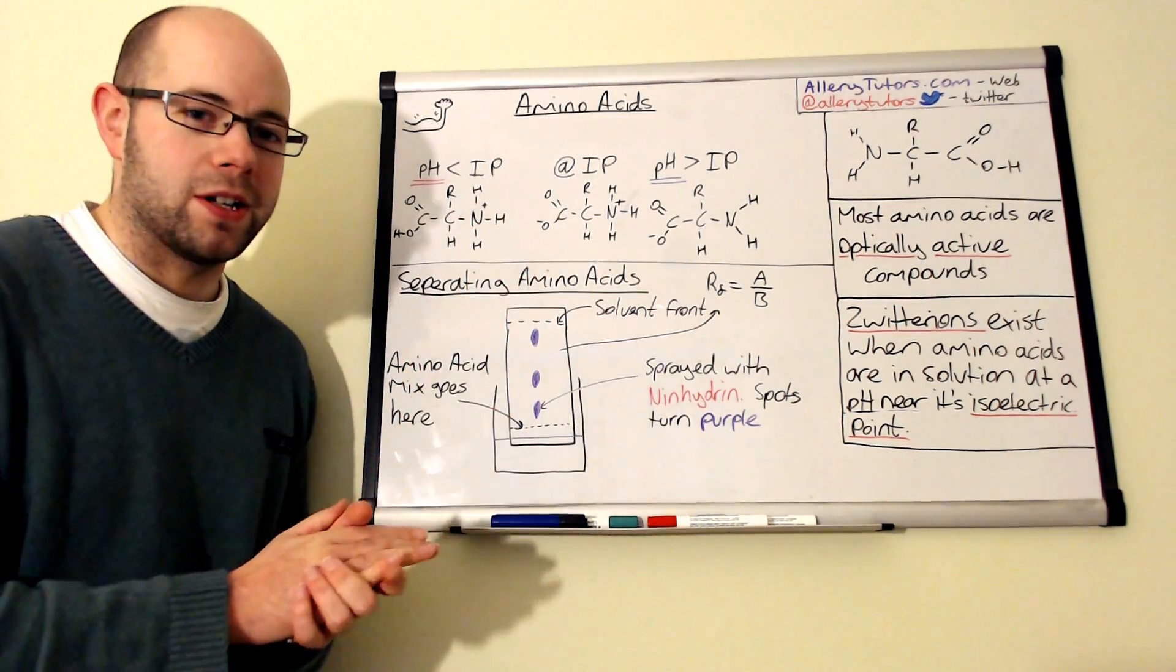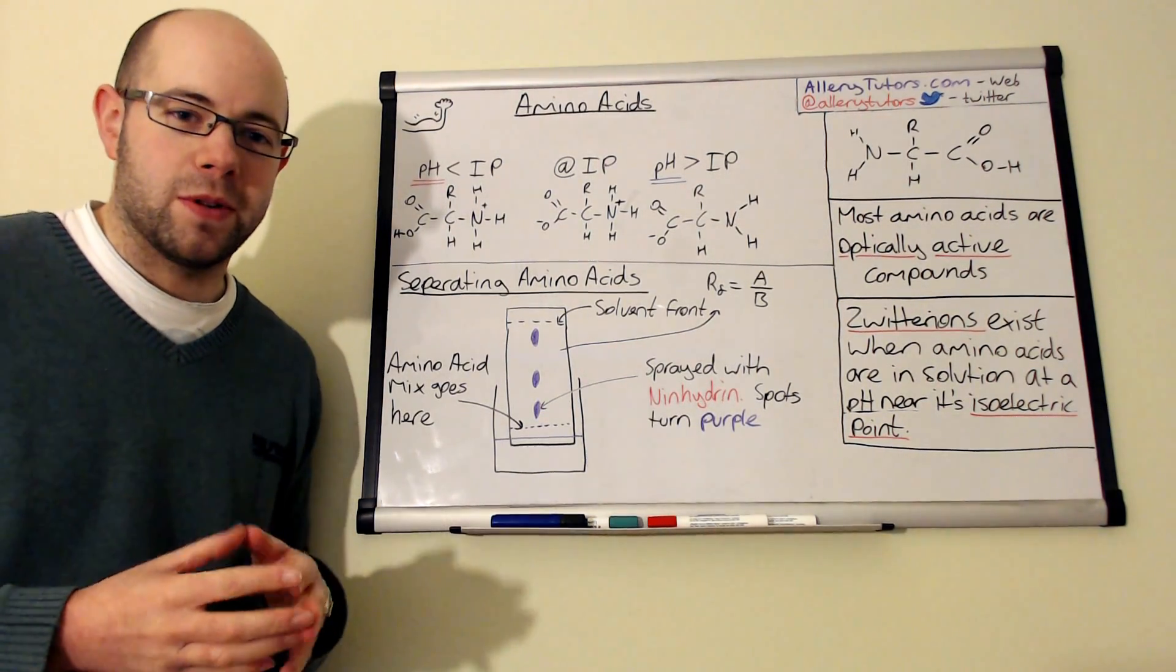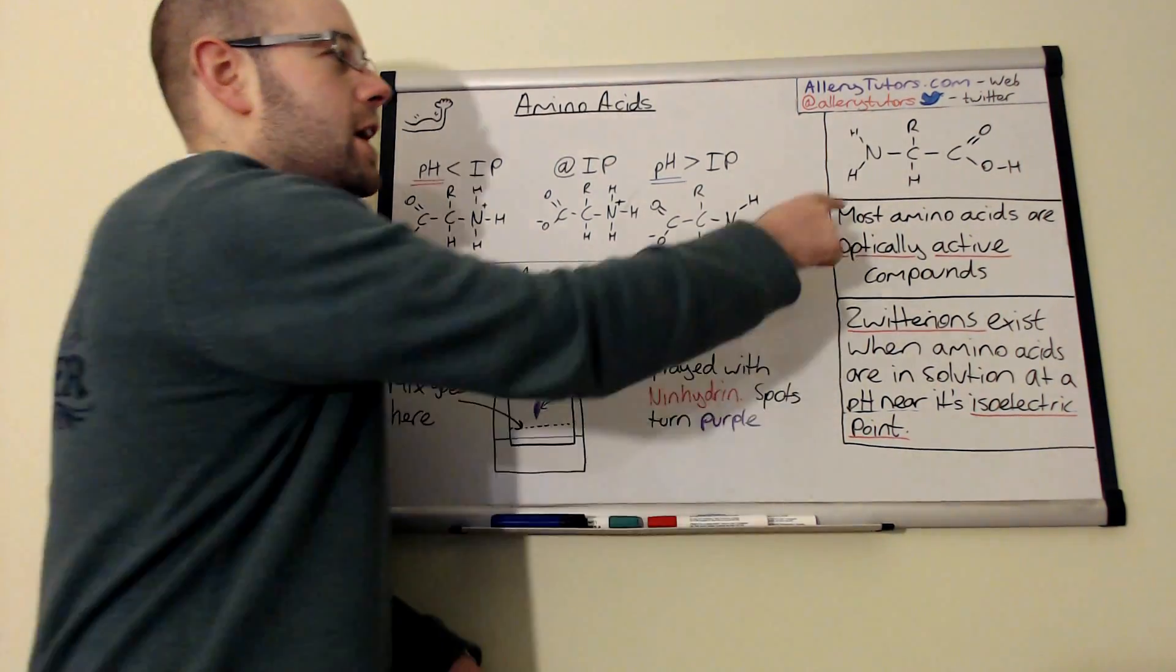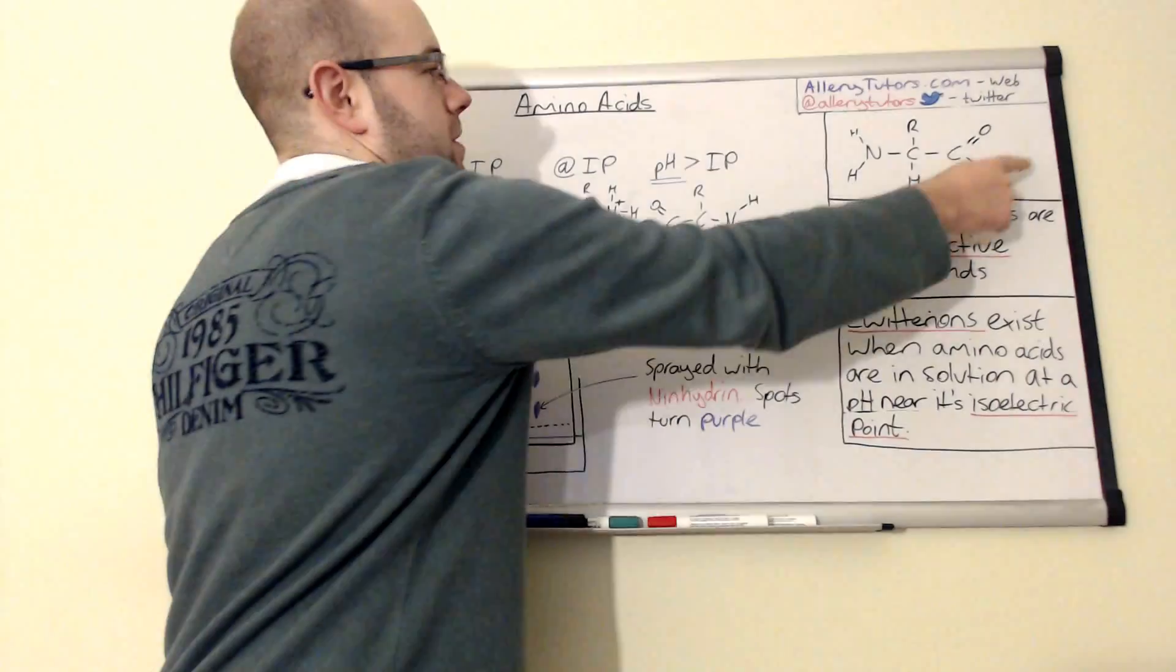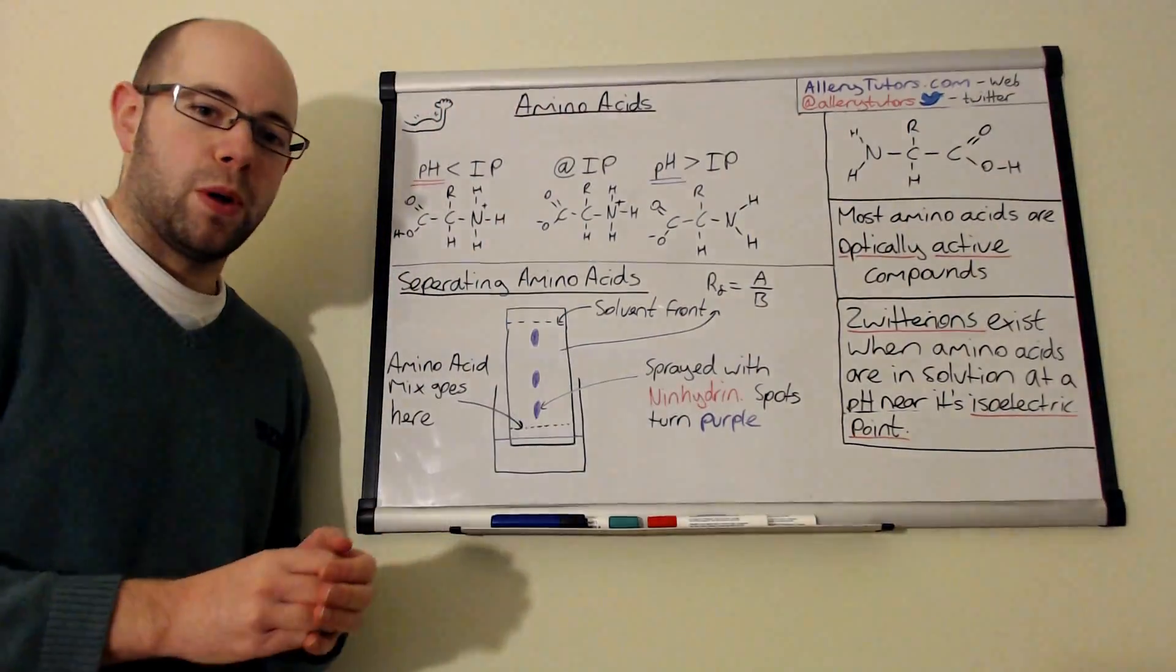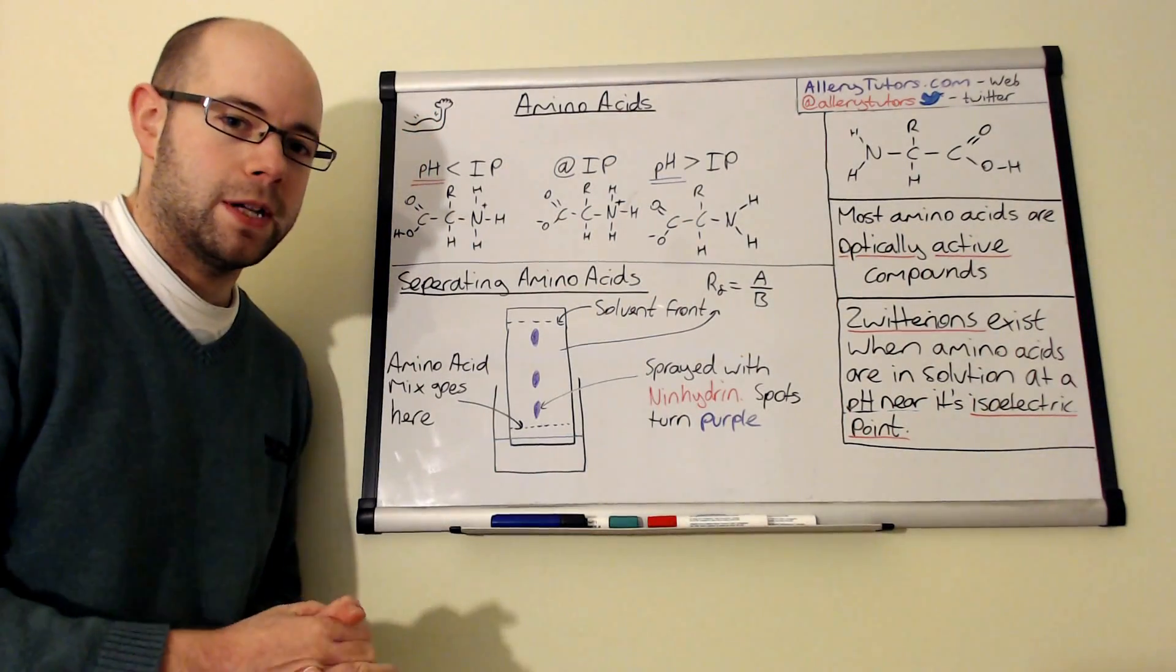So I'm going to start by looking at the structure of an amino acid. An amino acid is a molecule with an amine group which has the NH2 and it's got an acid group, a carboxylic acid group, which is this group here. And they're both bonded, if it's an alpha amino acid, they're both bonded to the same carbon that's in the middle.